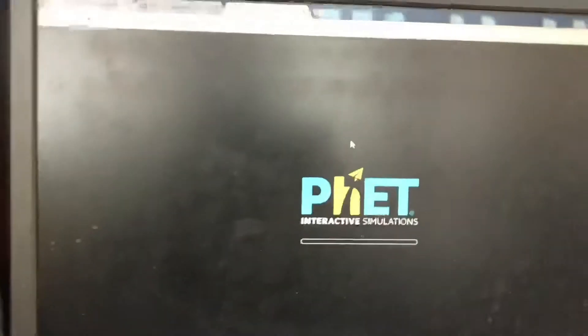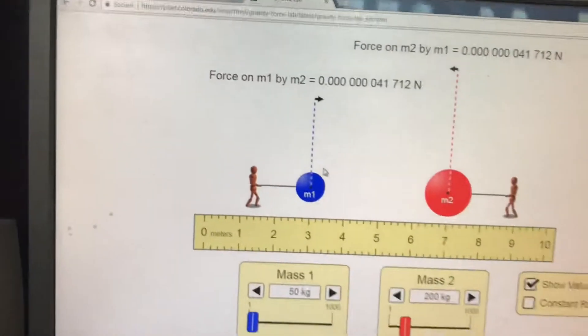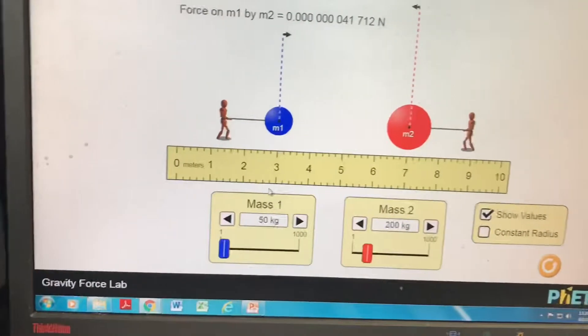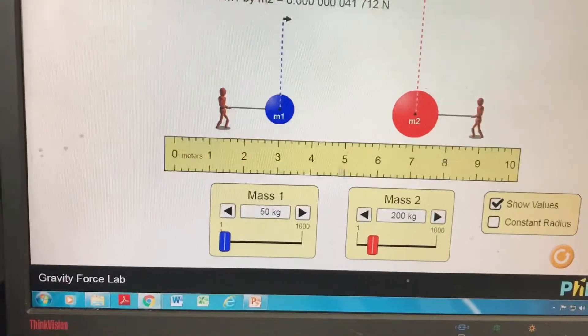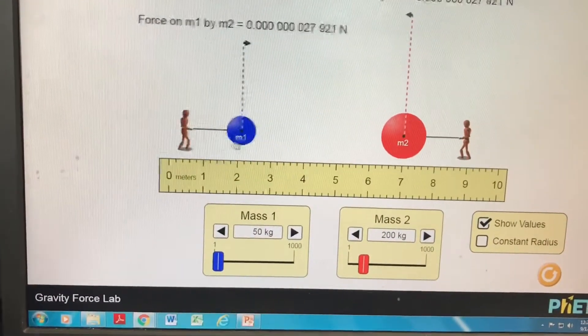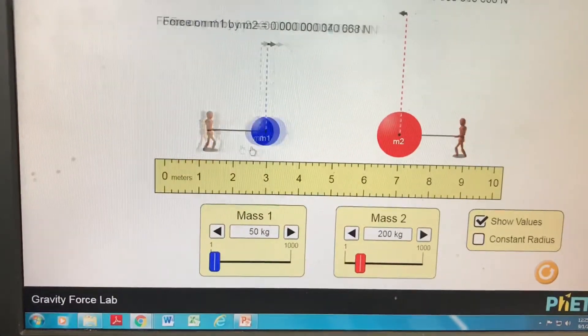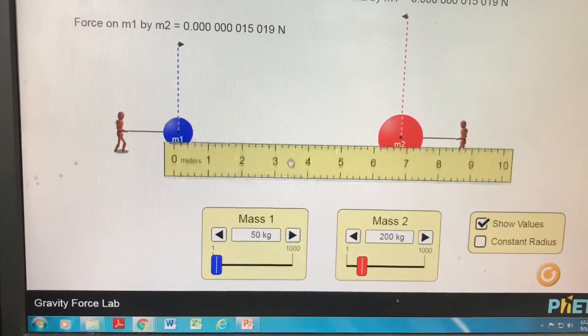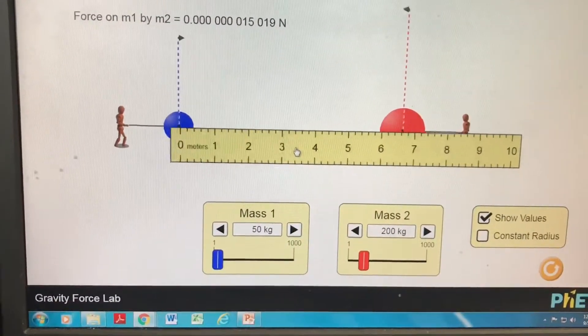Lab 4 is the gravity force lab. Things you can change include distance - you can take your mouse and move them close, then line up your ruler and measure the distance.